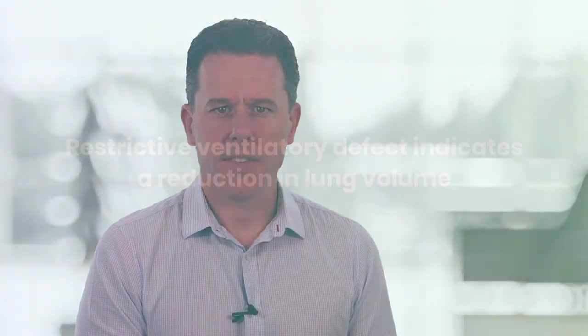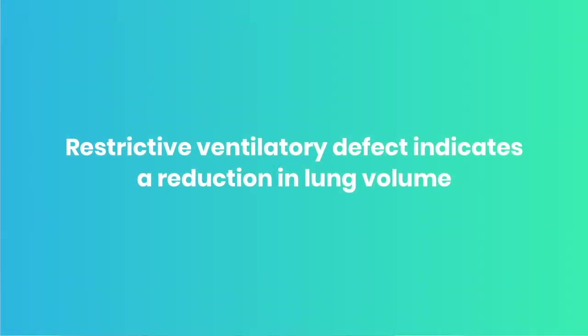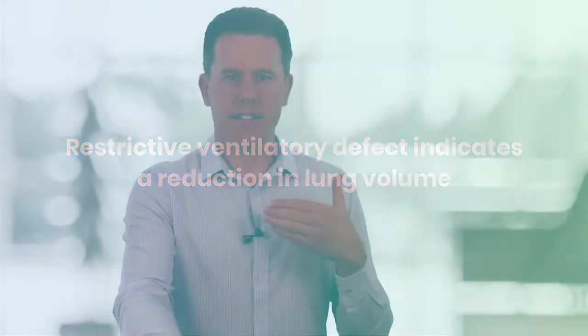A restrictive ventilatory defect essentially just means that the lungs are reduced in their volume. So when we do spirometry, we measure the total amount of air that can be expired, and we measure that as the forced vital capacity, the FVC. If the FVC is reduced, then this is consistent with a restrictive ventilatory defect, because the FVC gives us a bit of an idea as to the lung volume.